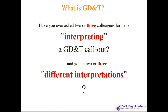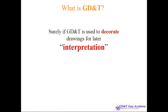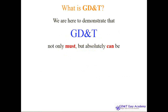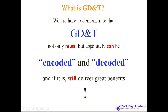Interpreting GD&T is not mathematical. Two plus two equals four — it cannot sometimes equal four point one. During this process today we are going to reveal how this happens, with real examples. If GD&T is used just to decorate or paint your drawing for later interpretation, then don't use it — it is useless. We are here to explain GD&T as something that must be encoded and decoded. I guarantee that we only use encoded and decoded — we don't interpret it.